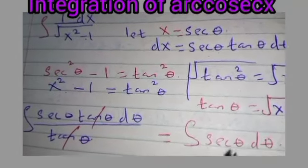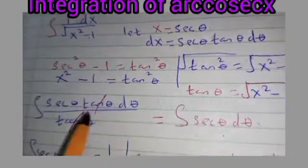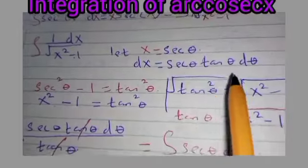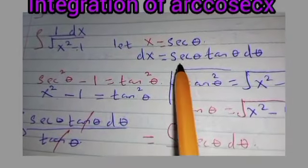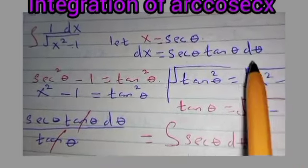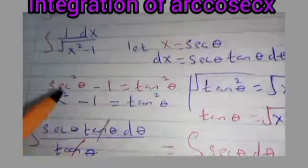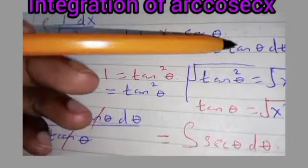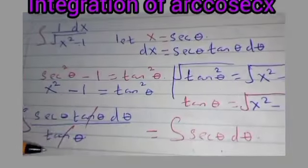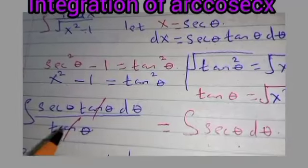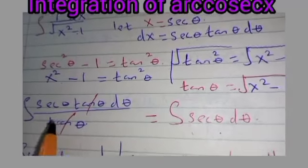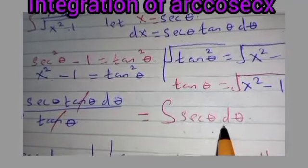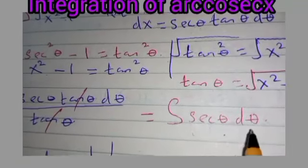Instead of dx we substitute sec θ·tan θ dθ. So we are substituting our dx with sec θ·tan θ dθ. The tan θ in the numerator and denominator cancel, and we are left with the integral of sec θ dθ.